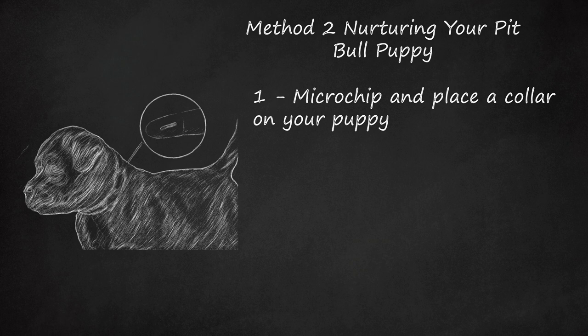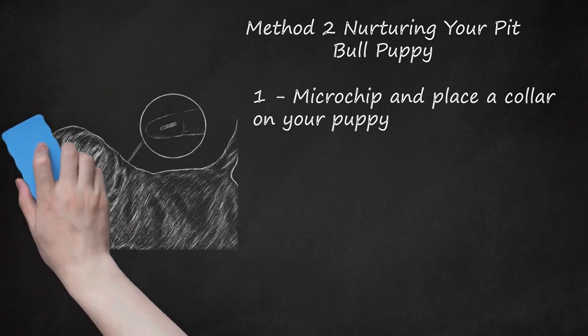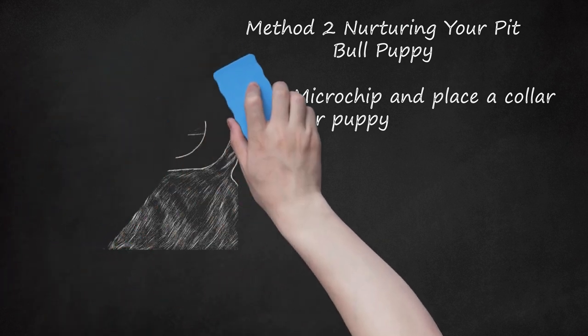Consider asking humane societies to microchip since some offer low-cost microchipping. Make sure your yard is secure, ideally with at least a 6-foot solid fence. Chain-link fences can be climbed and they are not a visual deterrent to other animals or humans bothering your pet.